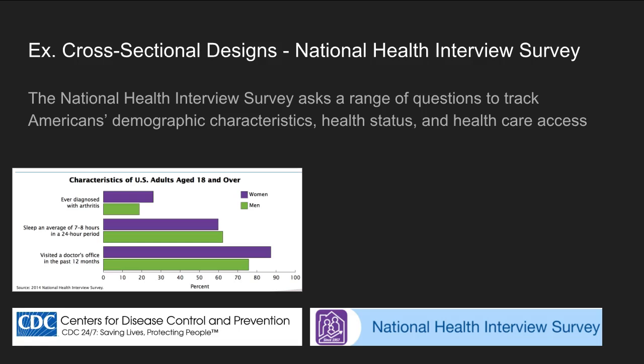One example of a cross-sectional design is the National Health Interview Survey. The NHIS is a national survey conducted by the CDC, the Centers for Disease Control and Prevention. It utilizes a range of questions that gather information about American demographic characteristics, their physical and mental health status, and their access to health care. What makes this a cross-sectional study is that each year a set of questions are asked of a group of people, but those people are not interviewed in subsequent surveys — they're only interviewed at a single point in time, and different people are interviewed each year.